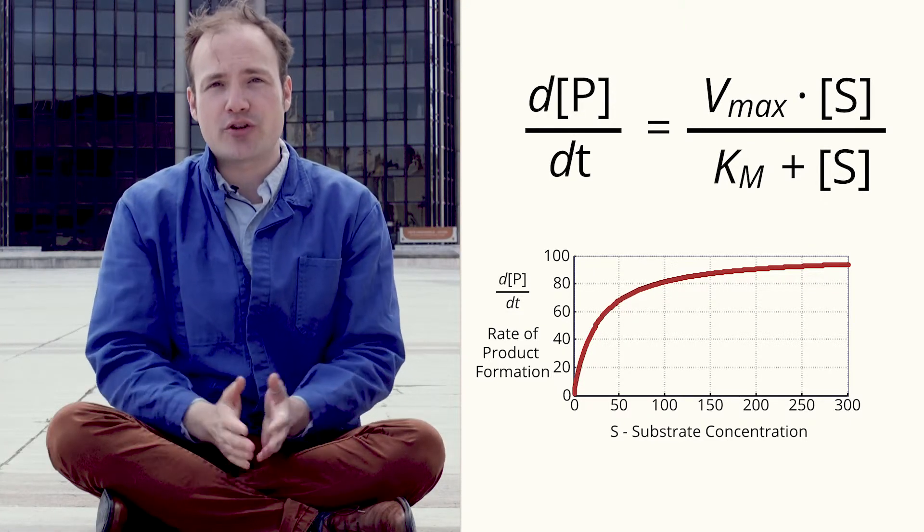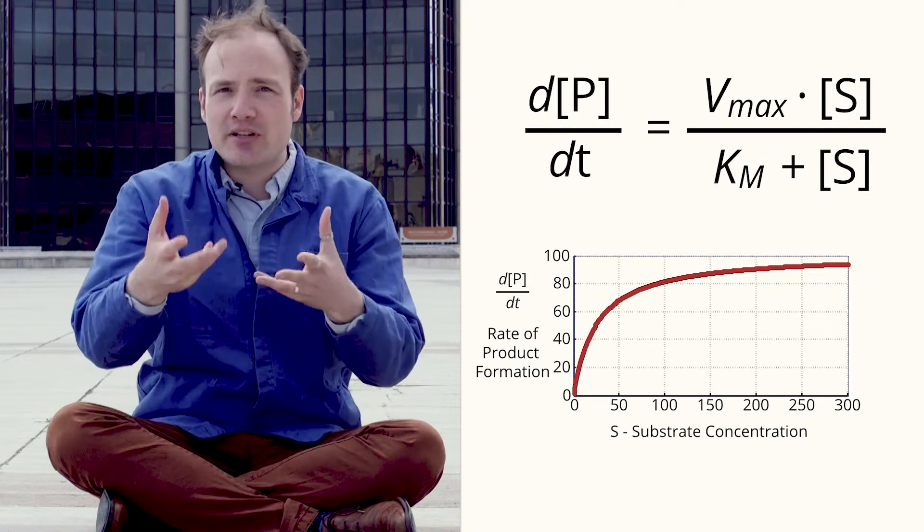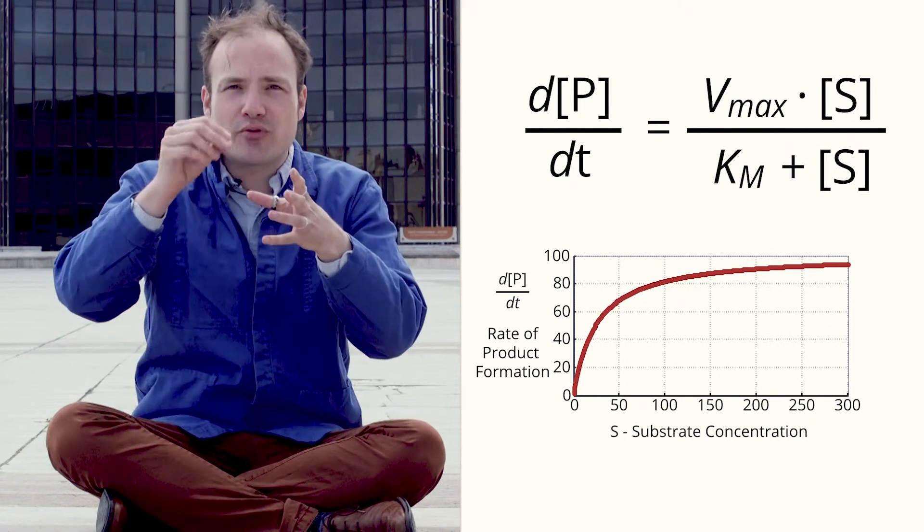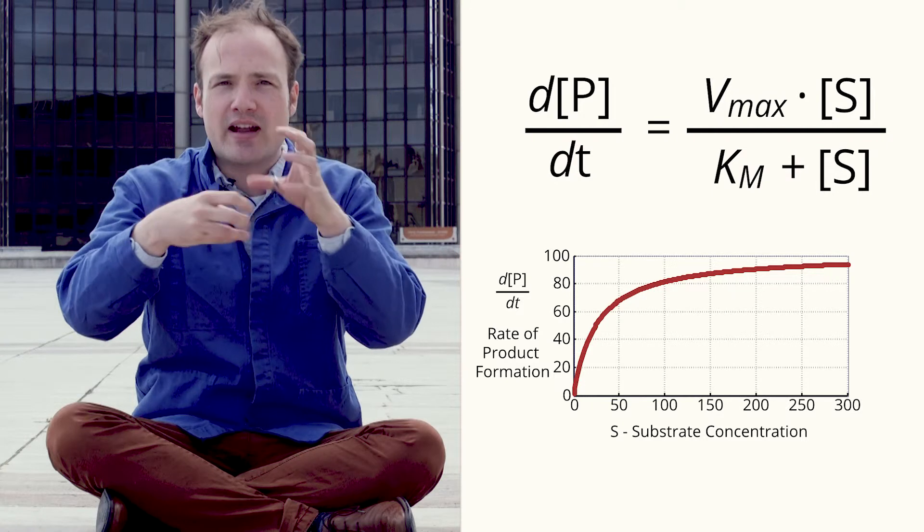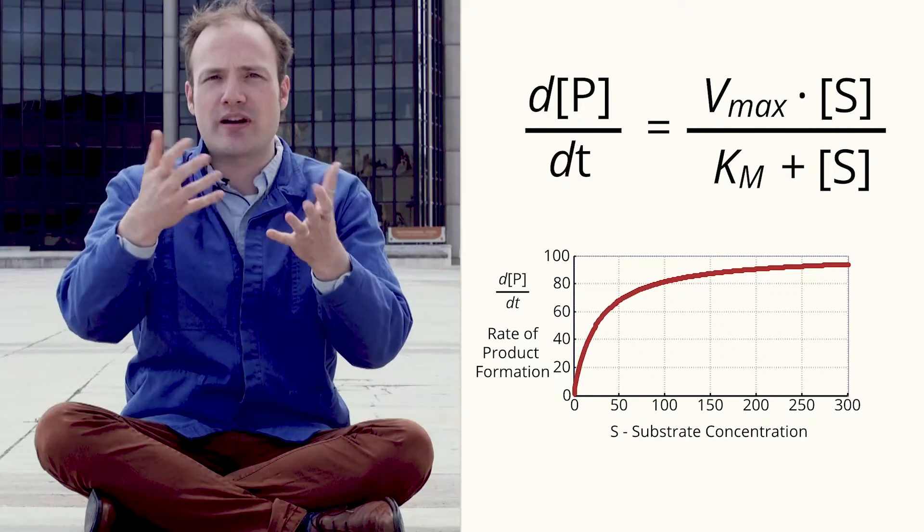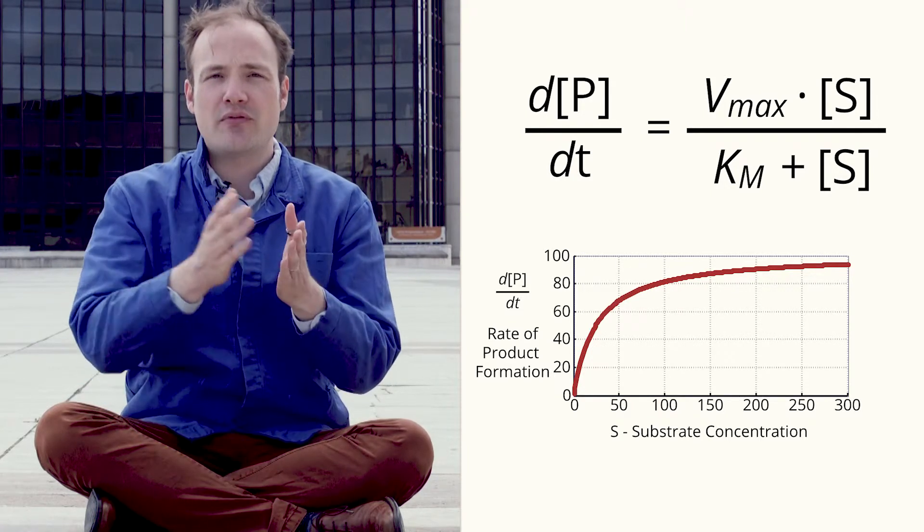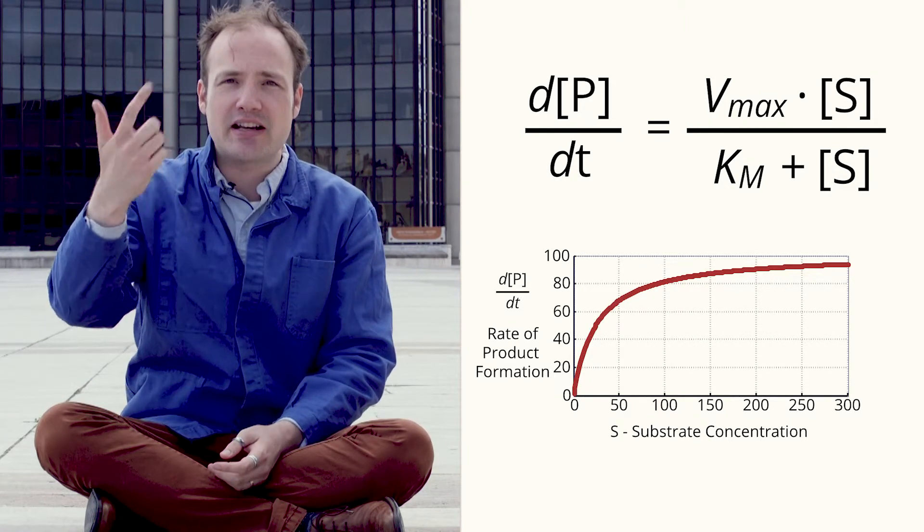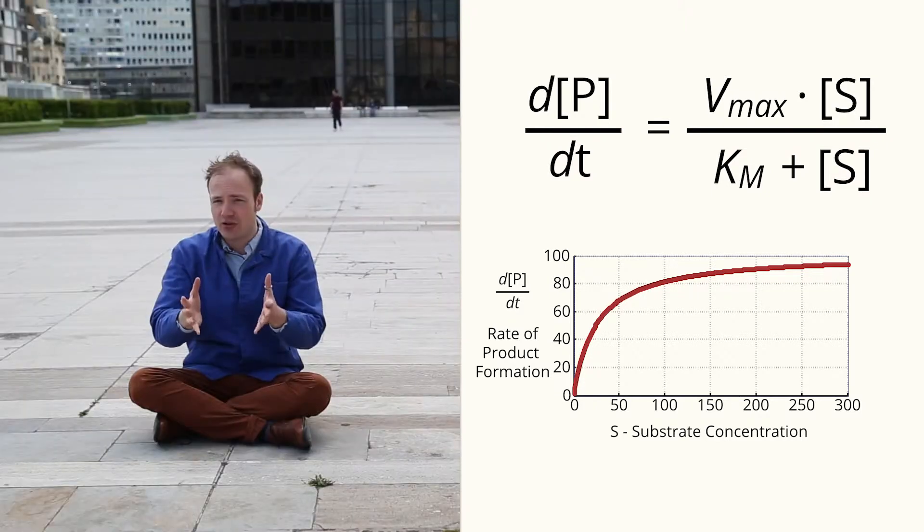So why is that? We say that the enzyme is saturated. It takes time to catalyze a chemical reaction. The substrate has to diffuse into the enzyme, the reaction has to occur, the product has to diffuse out, so the enzyme can only chew through so much substrate at a time. Once there is enough substrate to keep the enzyme constantly engaged, the reaction can't go any faster.